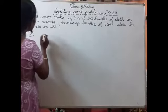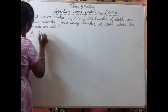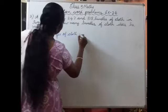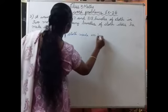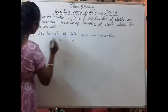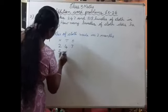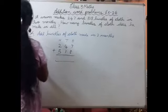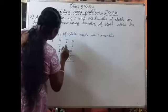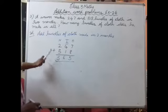Solution - add bundles of cloth made in 2 months. We have to add both these numbers. So first we write ones, tens, hundreds. The numbers given are 247 plus 318. 7 plus 8 is 15, one carry. 4 plus 1 is 5, 5 plus 1 is 6. 2 plus 3 is 5. So 565 bundles of cloth he made in all.